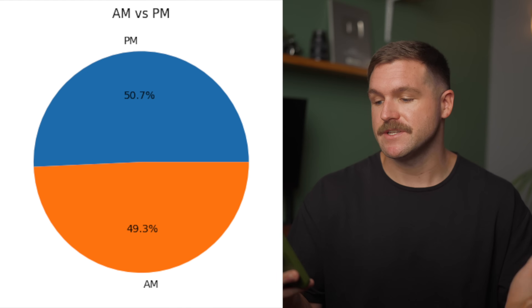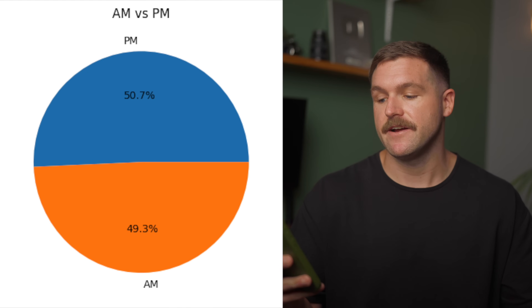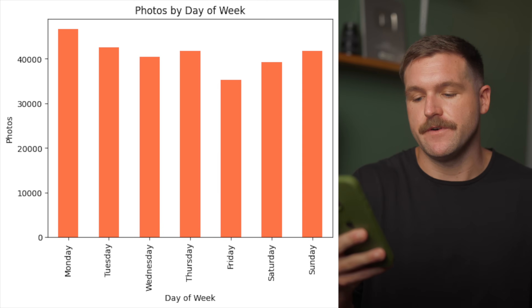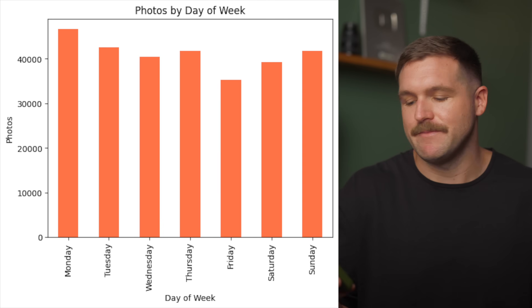Looking at time of day, AM versus PM is pretty dead even. Photos taken by hour show a big spike at 5 AM, which tracks — I do shoot a lot at sunrise, especially back in the day. But I don't know how much I trust this data, because I can't say for sure my camera's time setting was always correct over eight or nine years of traveling. I'm not always resetting to the correct time zone. The day-of-week data also doesn't really matter — it shows an even split.